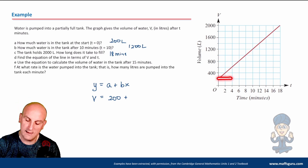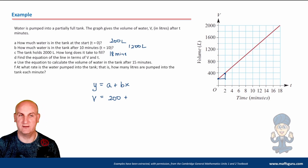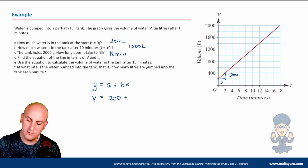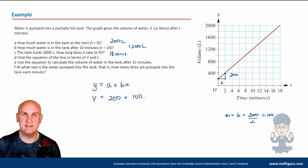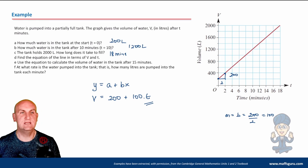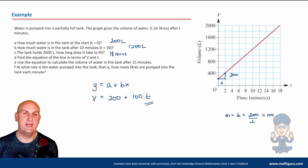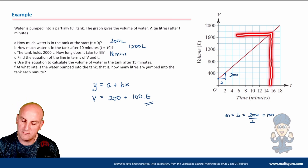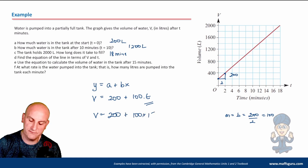To find the gradient, I choose two easy points on the line. Going across two minutes and up 200 liters — not 400, which trips a lot of people. So the gradient = 200 ÷ 2 = 100. The equation is v = 200 + 100t. I use t because that's what's on the horizontal axis, not x. Now I can find the volume at any time t. To calculate the volume after 15 minutes: let t = 15, so v = 200 + 100 × 15.